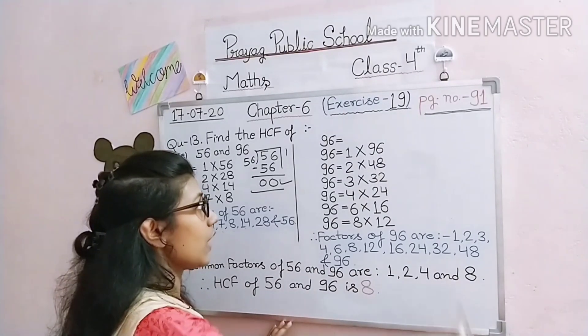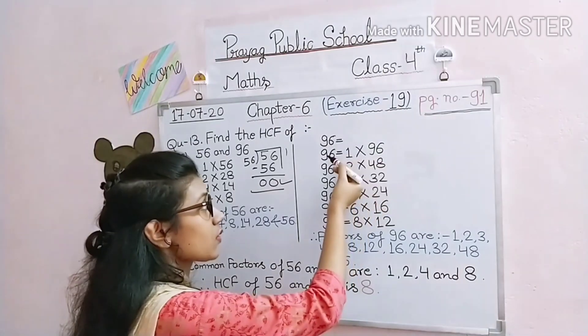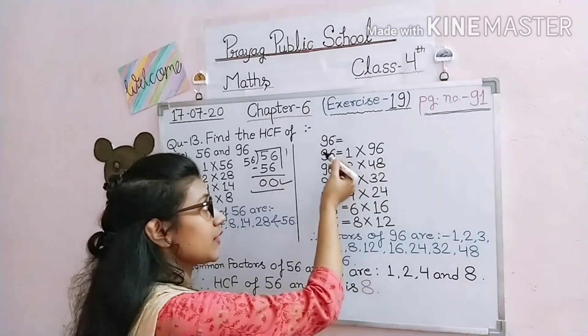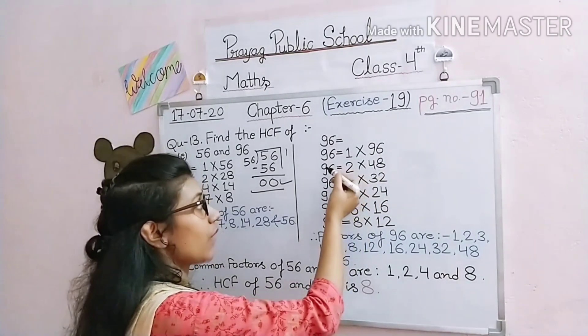Now, using the same process for 96 — any number that completely divides 96 is its factor. 1 and 96, 2 and 48, 3 and 32, 4 and 24 are factor pairs. 5 does not divide 96. 6 and 16, 8 and 12 are factor pairs. You must do the division process in your rough copy to check which number divides the given number.